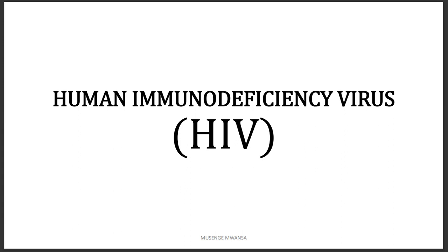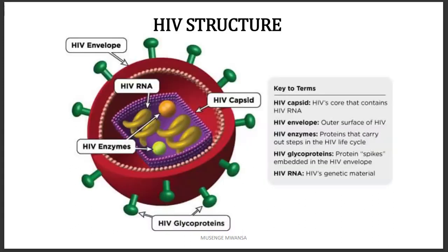This is the basic structure of the HIV virus. It has an outer layer or membrane which is a lipid bilayer — we call this the HIV envelope. This envelope actually comes from the host cell, not from the virus itself. Just below the envelope we have another layer.